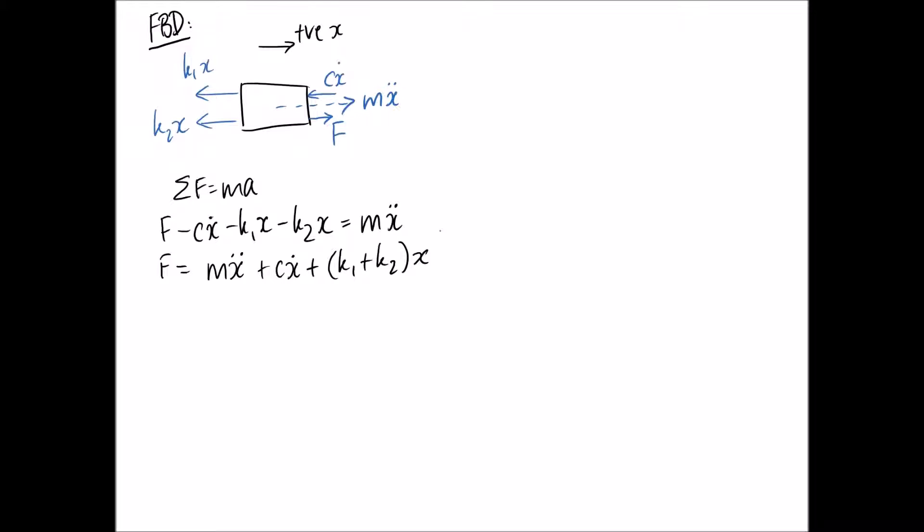Now to be able to use my general form of the equation with omega n and zeta, I need to normalize it such that I have a one in front of the x double dot term. So dividing everything by m, I get that.